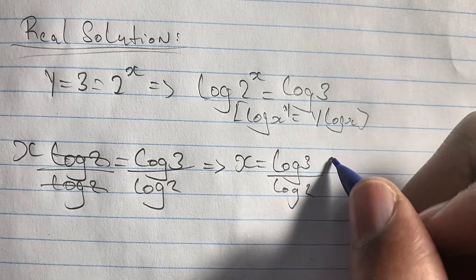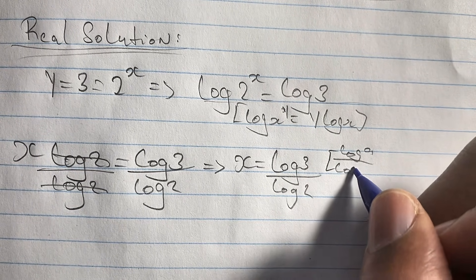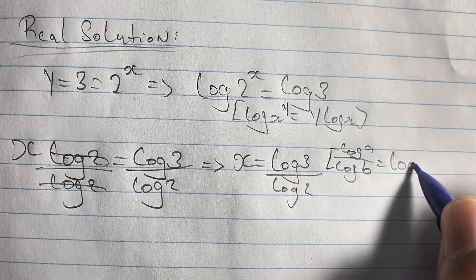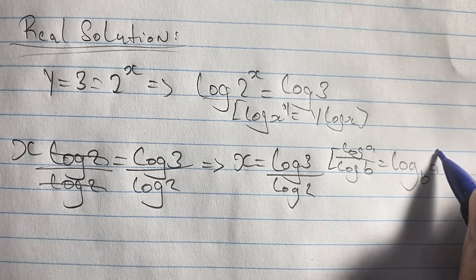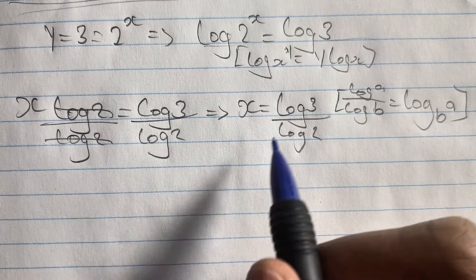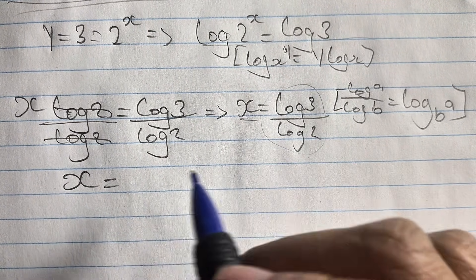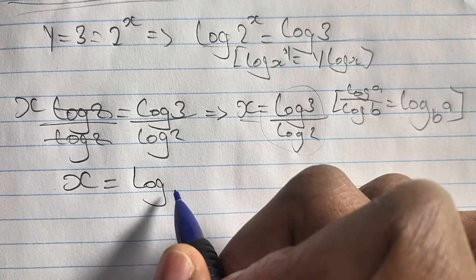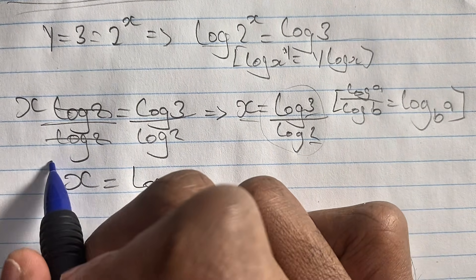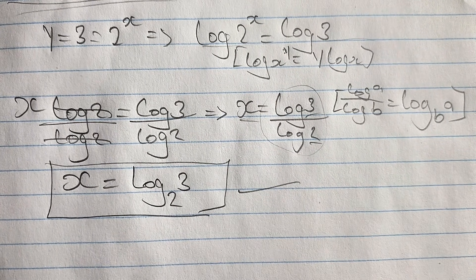Simplifying our solution for x, we apply the change of base rule: log(a) / log(b) = log base b of a. Therefore, since x = log(3) / log(2), we can write x = log base 2 of 3. This is our solution for the value of x in our equation.